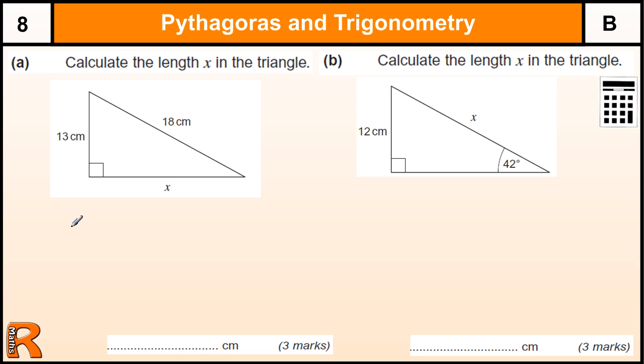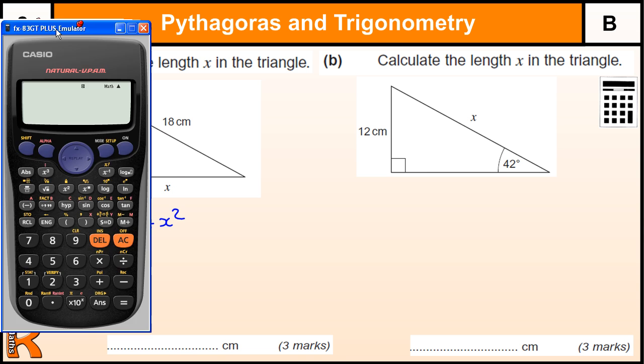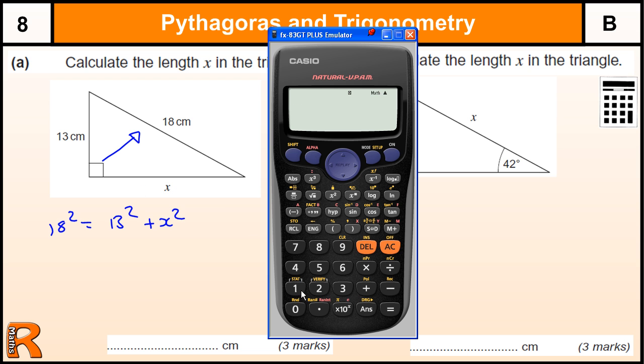So let us run through this. We know from Pythagoras that the longest side, the hypotenuse, squared 18 squared equals the sum of the squares of the other two sides. So we have got 18 squared is 13 squared plus x squared. Now 18 squared equals 324, 13 squared is 169 and x squared we are trying to find.